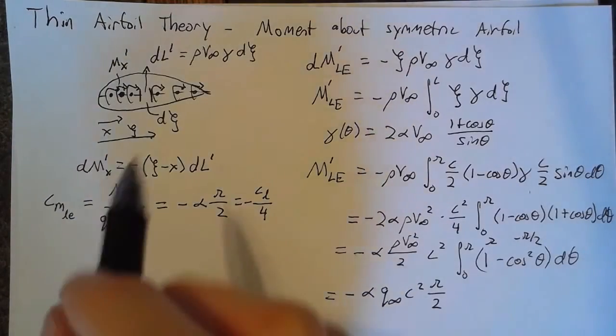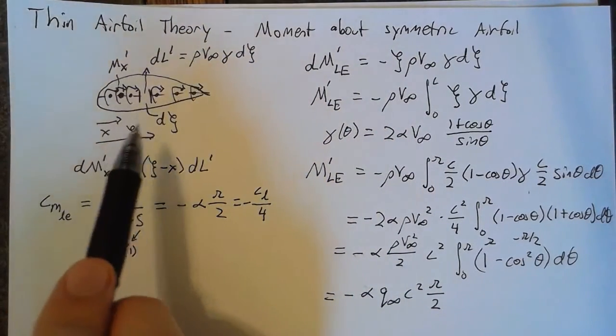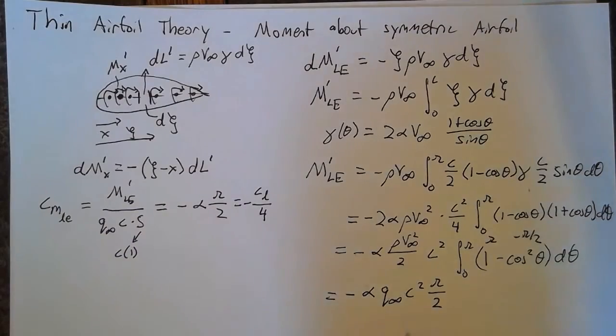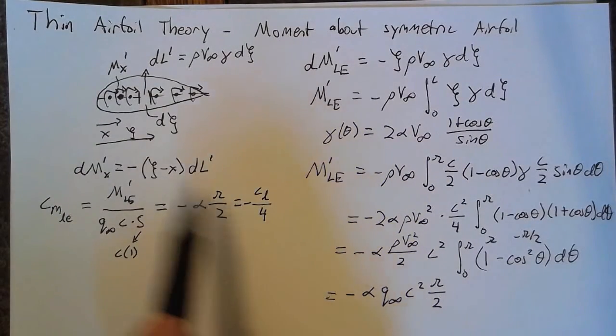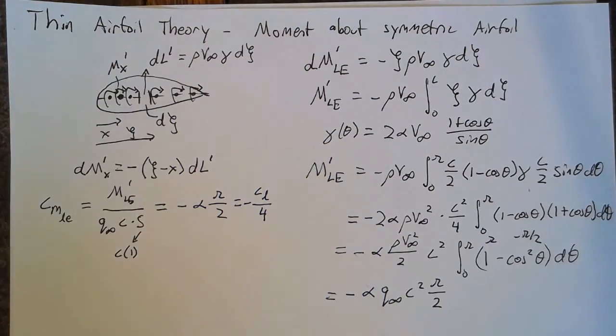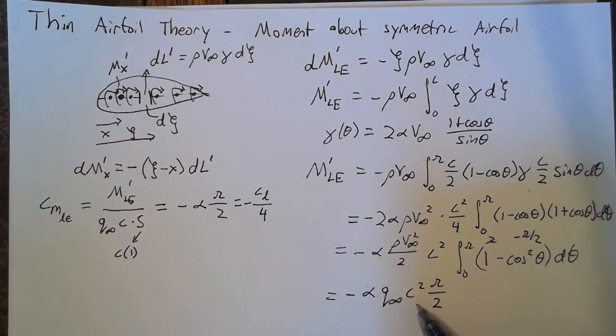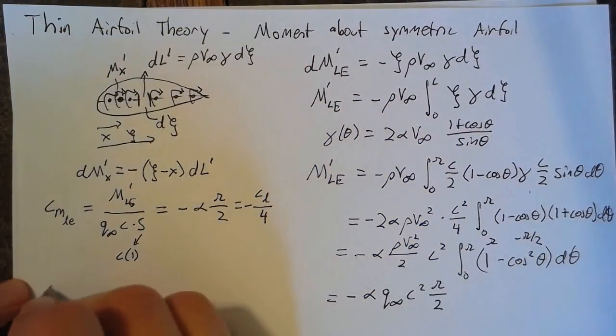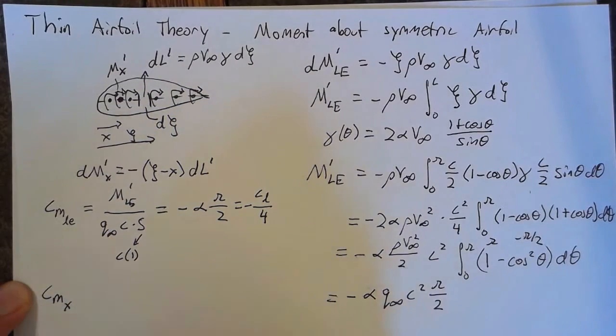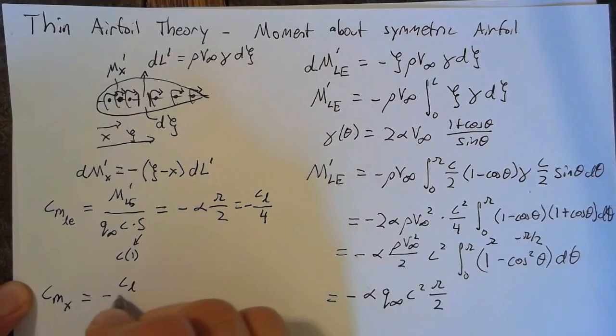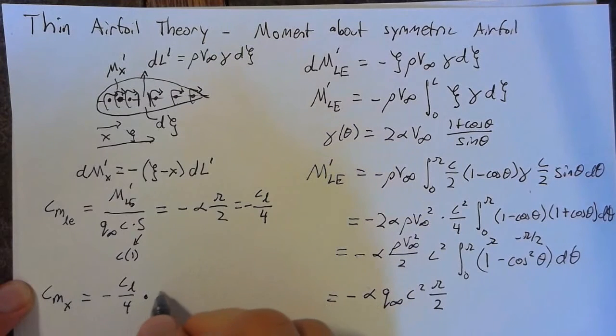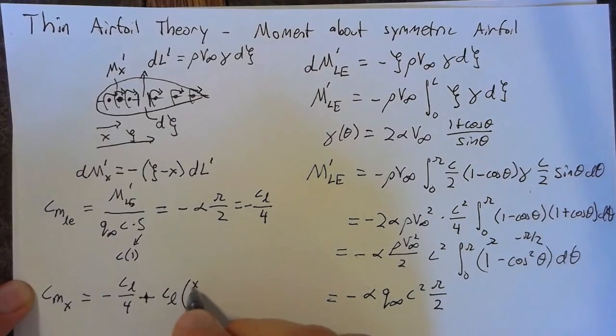You may recall that as you move the distance from the moment to the point of the lift, the term varies based on the distance times the lift. What I'm saying is, if we want to find Cm(x), this becomes -CL/4 plus CL times x/c.